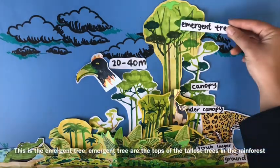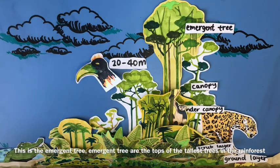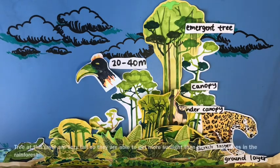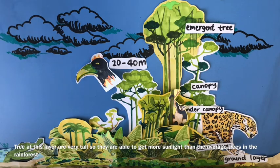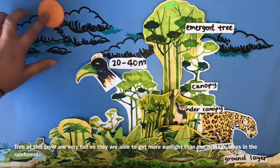This is the emergent trees layer. Emergent trees are the tops of the tallest trees in the rainforest. Trees at this layer are very tall, so they are able to get more sunlight than the average trees in the rainforest.